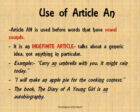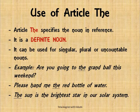Here's another example: 'I will make an apple pie for the cooking contest.' Apple makes the sound A, which is a vowel sound, therefore you use AN. 'The Diary of a Young Girl is an autobiography.' Autobiography again starts with the vowel sound A, therefore you use AN. Remember to use A and AN before consonant and vowel sounds respectively — I'm talking about sounds, not letters.